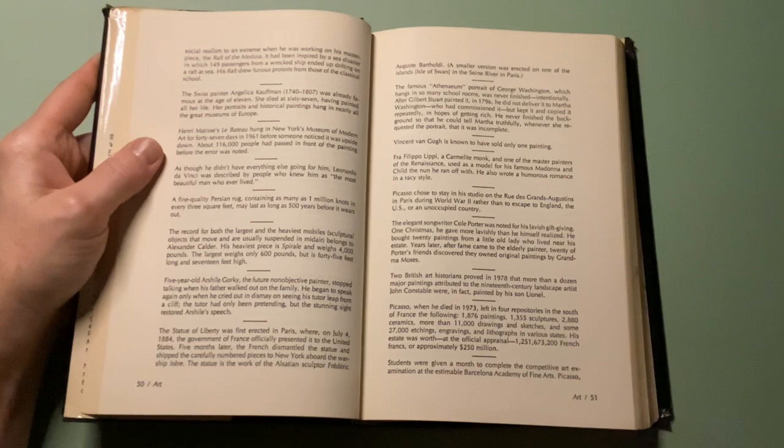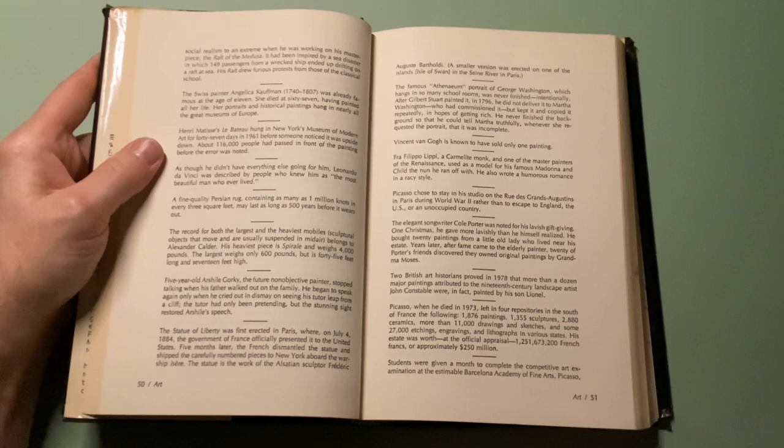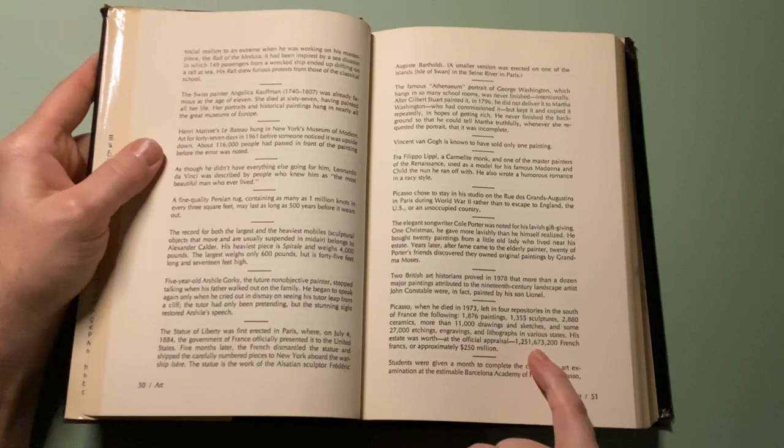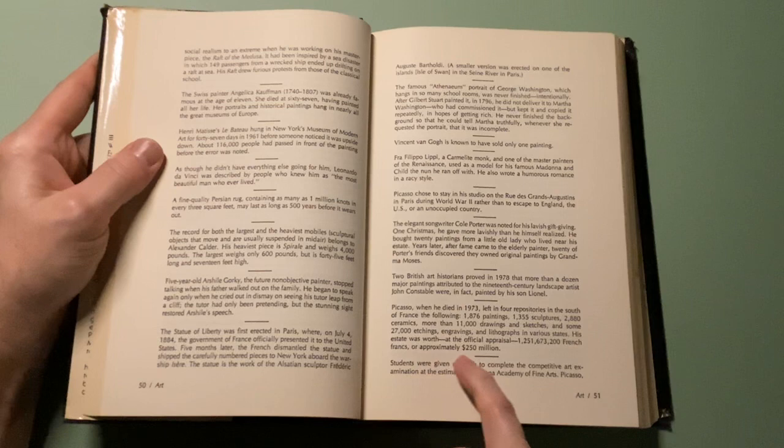Picasso, when he died in 1973, left in four repositories in the south of France the following: 1,876 paintings, 1,355 sculptures, 2,880 ceramics, more than 11,000 drawings and sketches, and some 27,000 etchings, engravings and lithographs in various states. His estate was worth, in the official appraisal, 1,251,673,200 French francs, or approximately 250 million dollars.